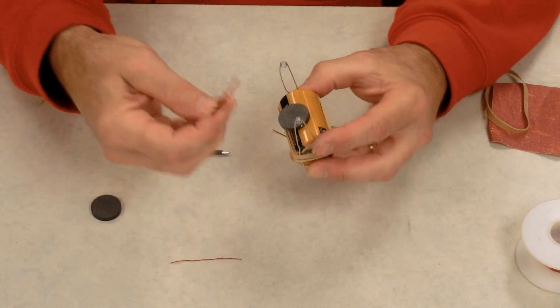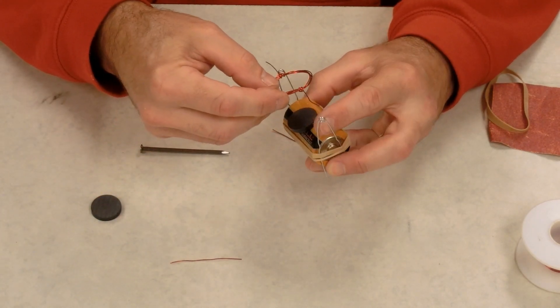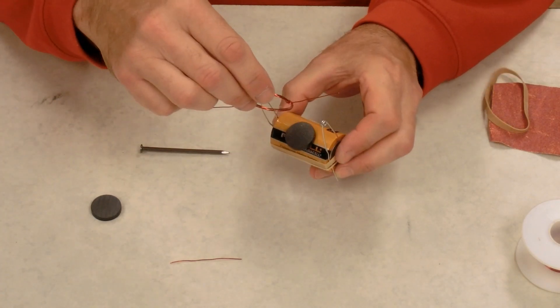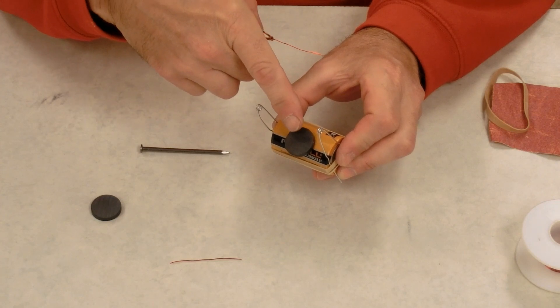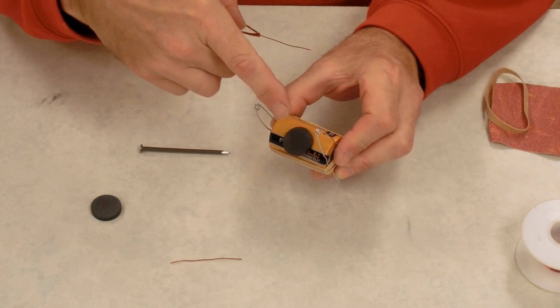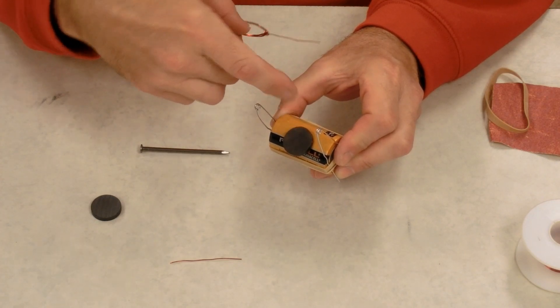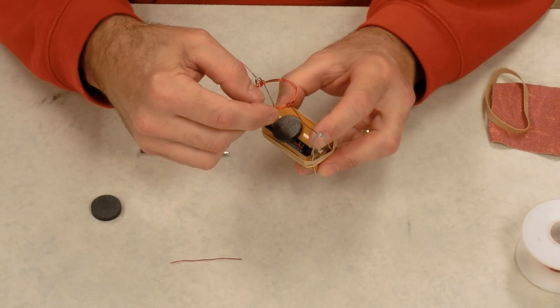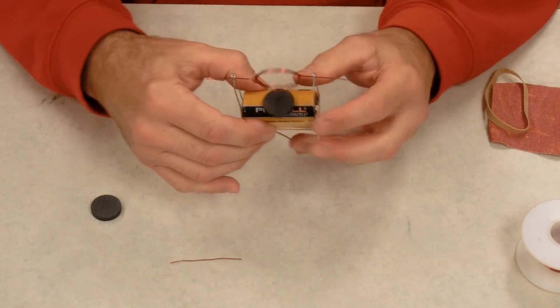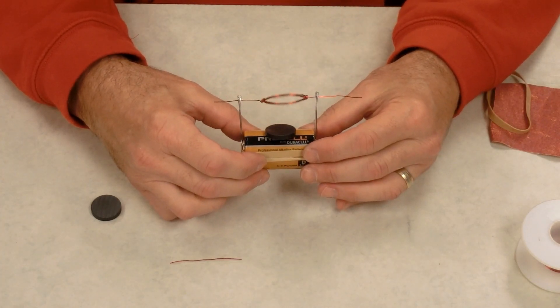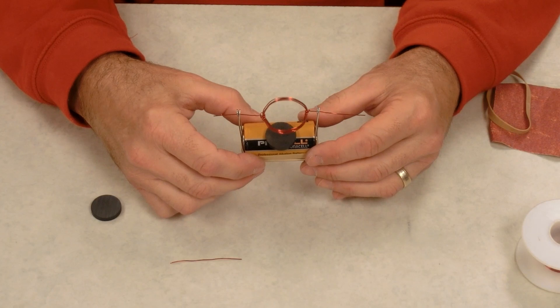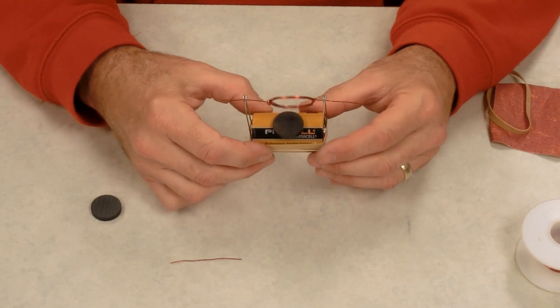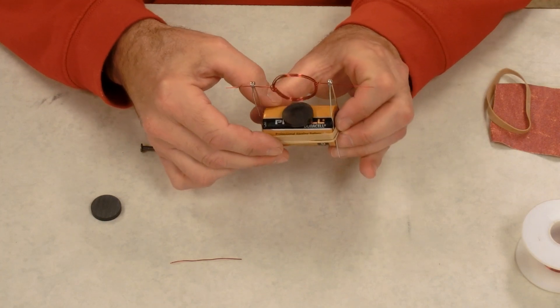So our loop will go in between there, and ideally current will run through this loop. The magnetic field from the permanent magnet below it will interact with the magnetic field around the current-bearing loop and cause it to spin. But when we do this, nothing happens. So you might be a little bit disappointed and think, oh no, I didn't do it right.